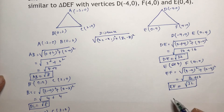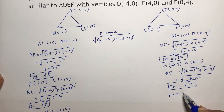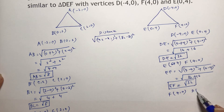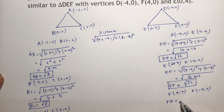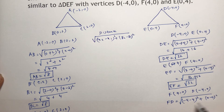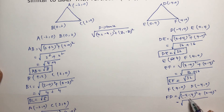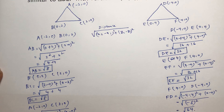EF is also root 32. Now for FD: F is (4, 0) and D is (-4, 0). So FD distance is under root of (-4 minus 4) whole square plus (0 minus 0) whole square. That is (-8) whole square, which gives root 64.